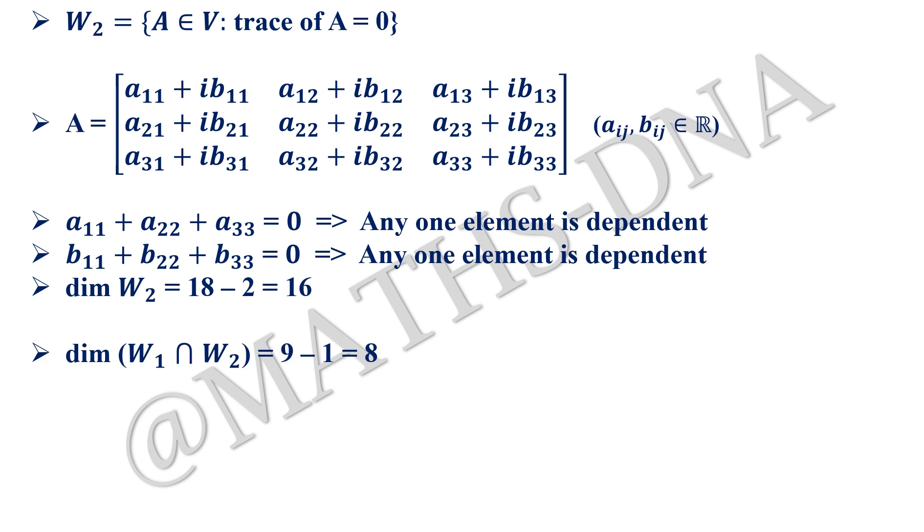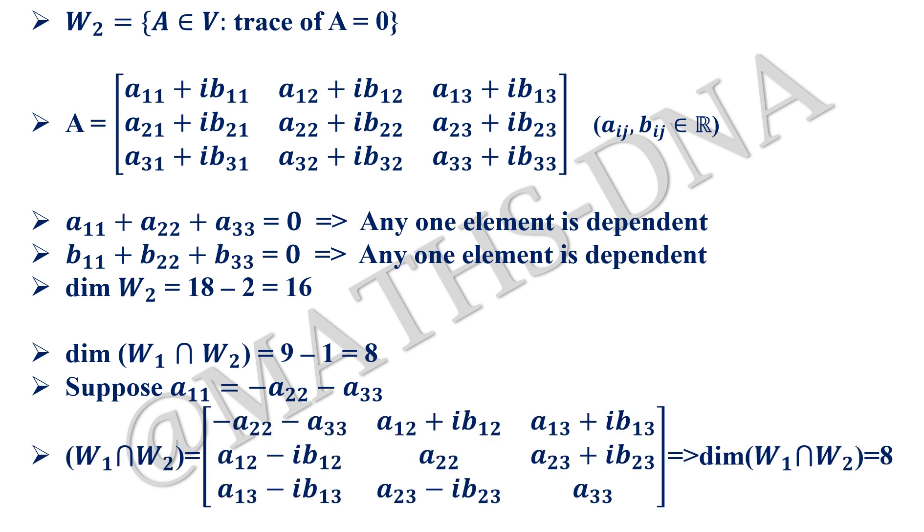Now we also need to find the dimension of W₁ ∩ W₂ and that will be 9 - 1 = 8. Now how is that 9 - 1 = 8? Let us see. Suppose a₁₁ is taken as -a₂₂ and -a₃₃. From here our intersection of W₁ ∩ W₂ will be -a₂₂ - a₃₃. Other two entries are same: a₂₂ and a₃₃.